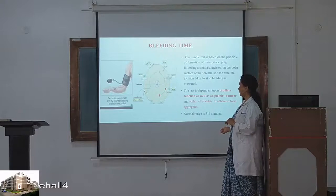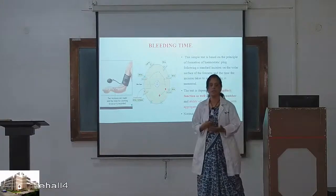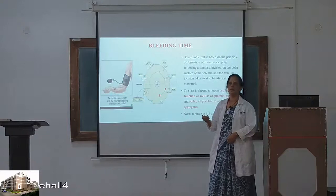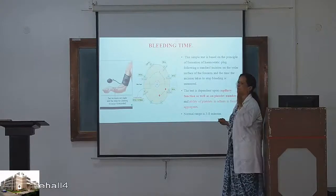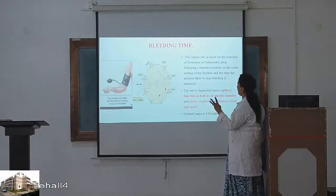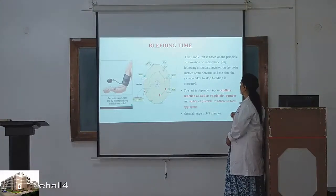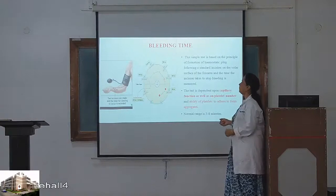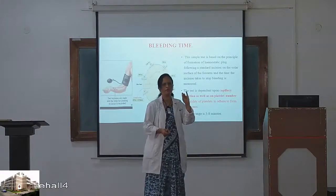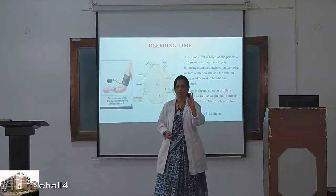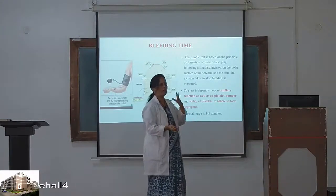Bleeding time — the normal bleeding time is 3 to 8 minutes. If a wound goes on bleeding, we need to know whether it's a bleeding disorder. It is a simple test based on the formation of a hemostatic plug following a standard incision on the volar surface of the forearm.